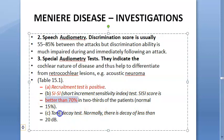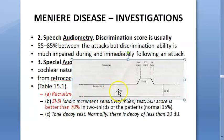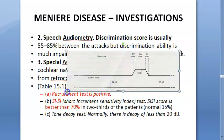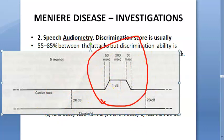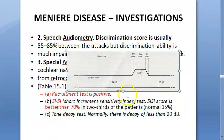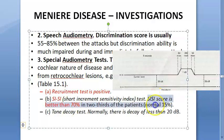The SISI score is better than 70% in Meniere's disease because these patients perceive loud sounds more easily due to recruitment. The tone decay test normally shows decay of less than 20 dB. In cochlear pathology, tone decay is mild to moderate — around 10–25 dB.